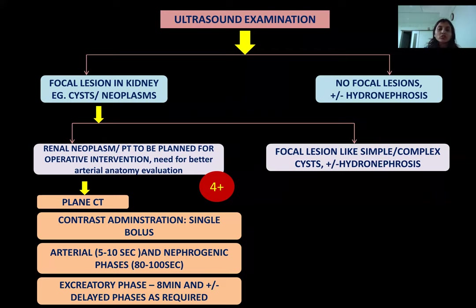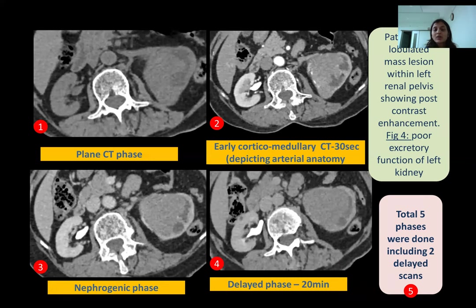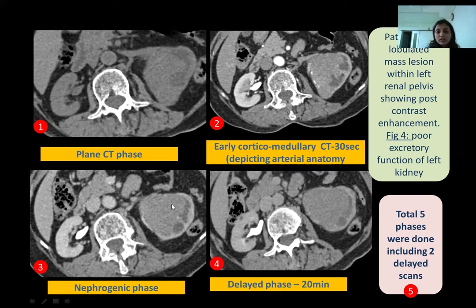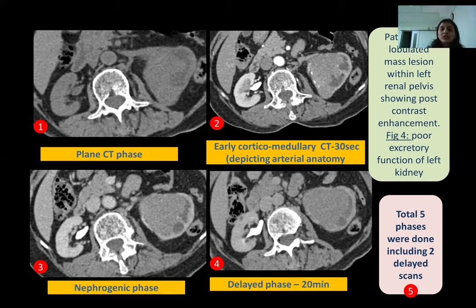In patients with renal neoplasm or those planned for operative intervention or needing arterial anatomy evaluation, a single bolus contrast injection was given with plain CT, arterial, nephrogenic, and excretory phases — totaling 4 or more phases. Figure 1 shows a plain CT with a lobulated mass in the left kidney. Figure 2 shows an enhancing mass in the left kidney with well-opacified abdominal aorta. Figure 3 shows the nephrogenic phase with uniform enhancement, though the left kidney shows poor medullary enhancement. Figure 4, a delayed phase at 20 minutes, shows contrast excretion into the right renal pelvis but not the left, indicating poor excretory function of the left kidney. A total of 5 phases were done using 2 delayed scans.